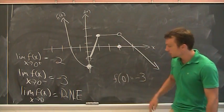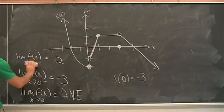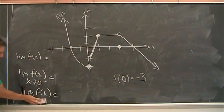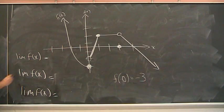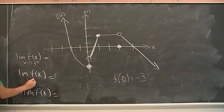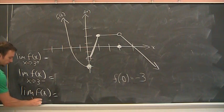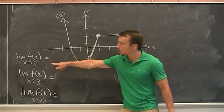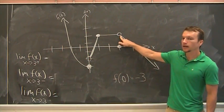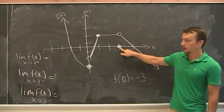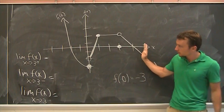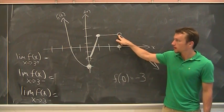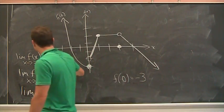Now let's look at the other interesting point — x equals 3 — which is a little different from x equals 0. We want to approach 3 from the right, from the left, and from both sides. What's the limit of f(x) as x approaches 3 from the right? The concept of a limit is: what does the function get really close to as x gets really close to 3 from the right? It's up here at 2.